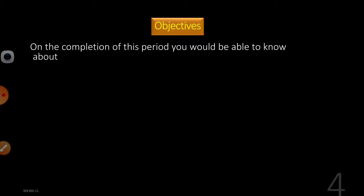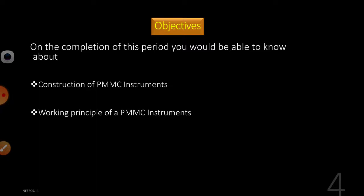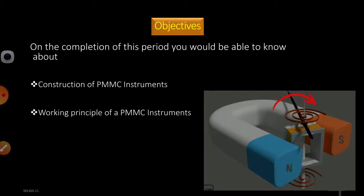We have also seen the various errors that occur in instruments. Now, coming to the practical point of view, the instrument that dominates in our electrical field for measuring DC supply is the moving coil instrument. Today's objectives are: to know about the construction of the PMMC instrument, the working principle of a PMMC instrument, and its salient points.